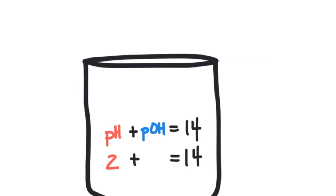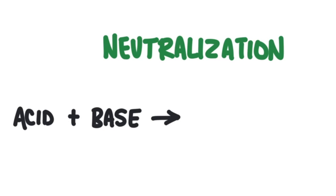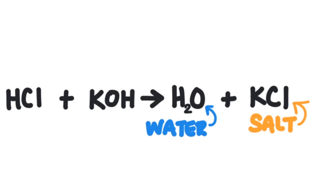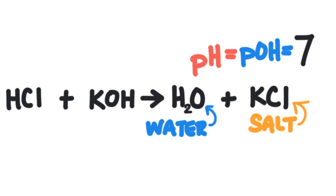I mentioned earlier that an acid and a base will neutralize each other when they come in contact. The reaction between an acid and a base is commonly called a neutralization reaction. In general: acid + base → salt + water. For example, the hydrogen from the acid switches places with the potassium ion and creates water (H₂O), and then we create the salt, potassium chloride. Salt here means ionic compound — we aren't necessarily talking about table salt, sodium chloride. When the acid and base neutralize each other, we usually end up with a neutral solution where the pH and pOH have equalized.